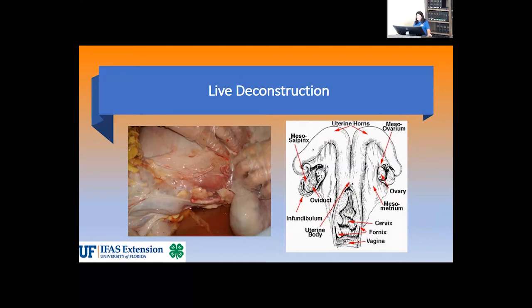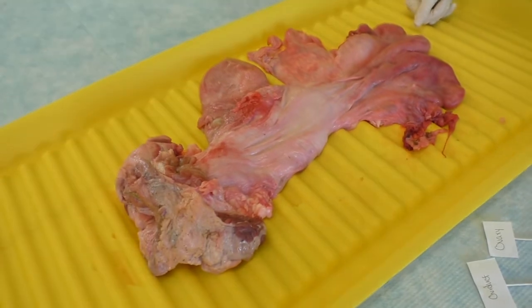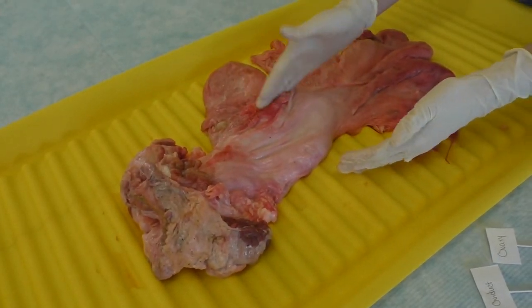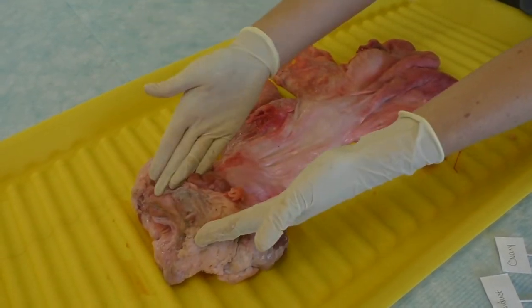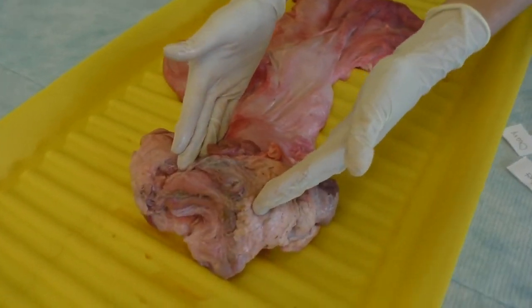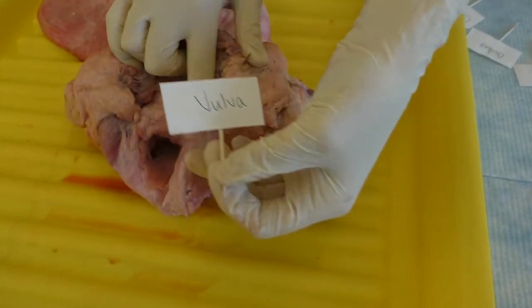Hi everyone, my name is Taylor Davis and I am the livestock agent for Highlands County. Now we're going to talk about the anatomy and structures of the female reproductive tract. We're going to start working from the outside inward. Our first structure — you might actually be able to see it just by looking at a cow — it's called the vulva.